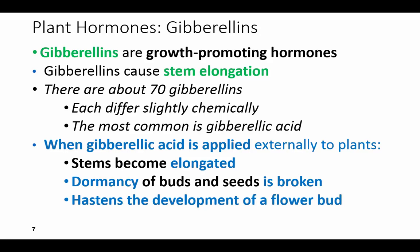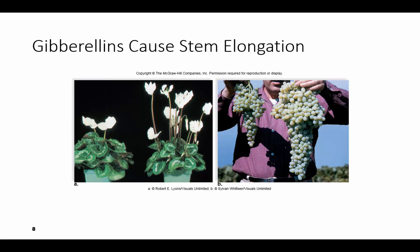Gibberellins promote growth — they cause stem elongation. There are about 70 of these and they all differ slightly chemically, but the most common is gibberellic acid. When gibberellic acid is applied externally the stems elongate, it breaks dormancy of the buds and seeds, and it hastens the development of the flower bud. As you can see in Figure A, the stems get longer, and in Figure B it will produce larger seedless grapes, so it increases the size of flowers and fruits.